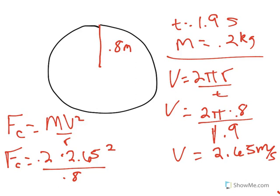So, 0.2 times 2.65 squared, I forgot the squared, divided by 0.8. And, we should get 1.75 newtons. And, that's the centripetal force. Alright, so we've got all that down. That's question B.